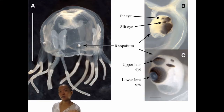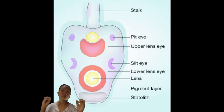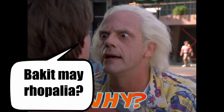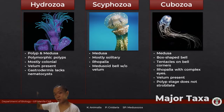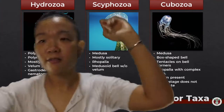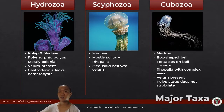Rhopalia are sensory organs that contain light-sensing structures as well as gravity-sensing structures called statoliths. Phytoplankton, zooplankton, and small fish all congregate in certain areas, and cnidarians need sensory structures to detect where their food is likely to be.